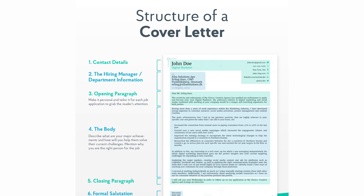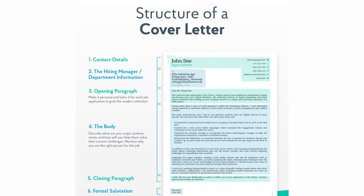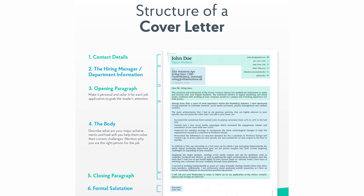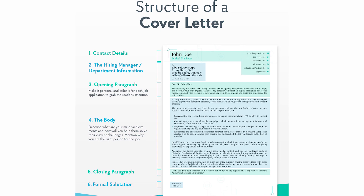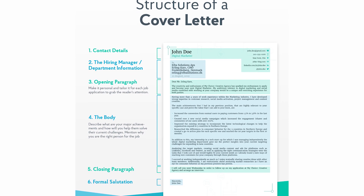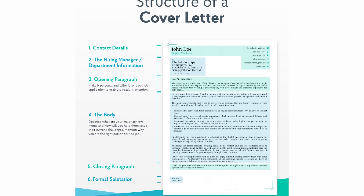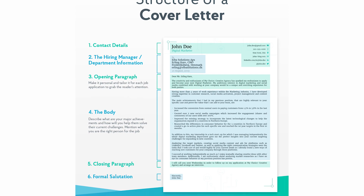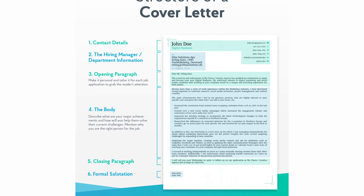The opening paragraph should be personal and tailored for each job application to grab the reader's attention. The body of the letter should describe your major achievements, how you will help them solve their current challenges, and mention why you are the right person for this job. The closing paragraph can include your availability or when you'd like to connect, followed by a formal salutation like 'sincerely' or 'thankfully.'